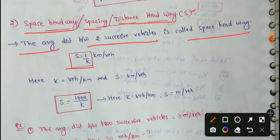S is equal to one by K. S equals one by K, where K means traffic density. So the reciprocal of traffic density is also called space headway.